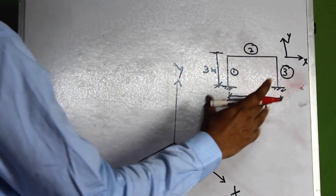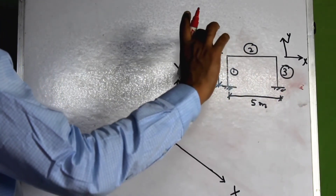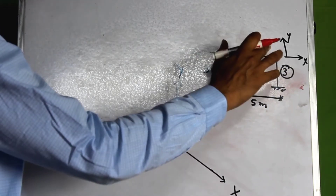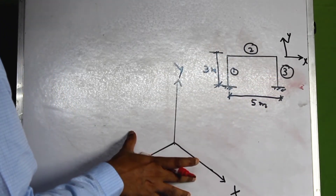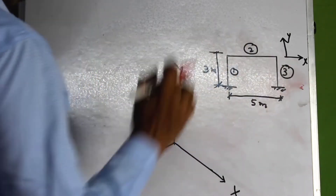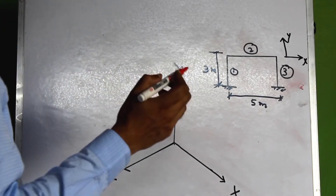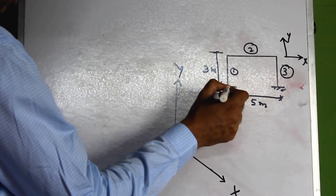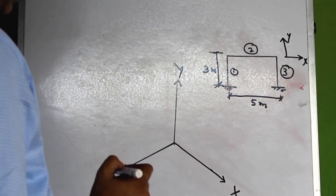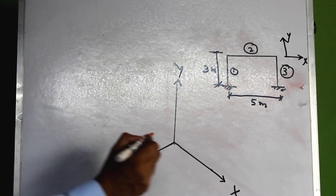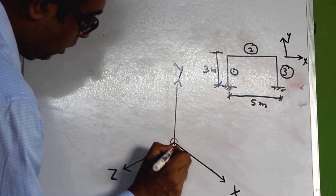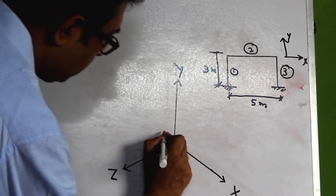Now let us define the joint coordinates of the nodes of the goal post frame structure. The goal post frame is 3 meters in height and 5 meters in width, defined in the XY plane. Let us represent this in the global axis system and imagine we are doing a computer modeling of this structure. We consider the first point to be located at the origin.